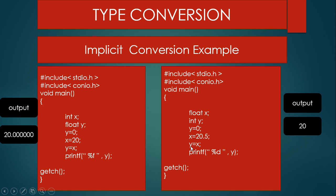The compiler automatically converts the float value into an integer value, but there is data loss because 20.5 is a floating point value. When assigning X to integer Y, only the value 20 is assigned to Y. Using the print function, the output will be 20. This is implicit type conversion — in example one the compiler converts int to float, and in example two float is converted to int automatically.